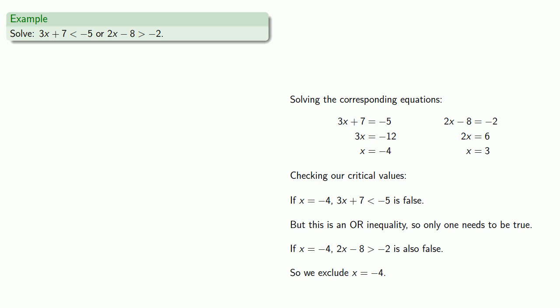Let's go ahead and graph this. Since x equals negative 4 is a critical value but it's excluded, we'll put an open circle at negative 4.